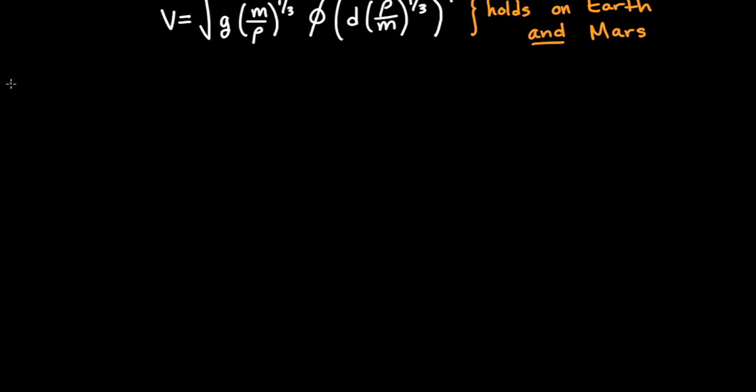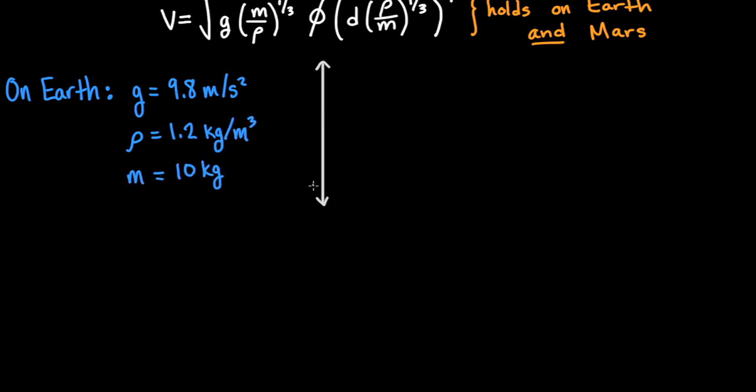On Earth, we know the gravity and atmospheric density. We can specify the mass of a test rover to be 10 kilograms. Then we might set up Earth-bound experiments by varying the canopy diameter of a parachute between 1 meter to 20 meters, and measuring the terminal velocity.